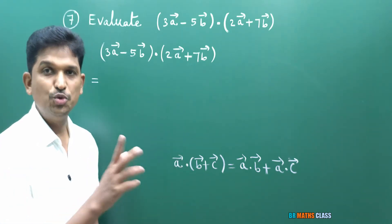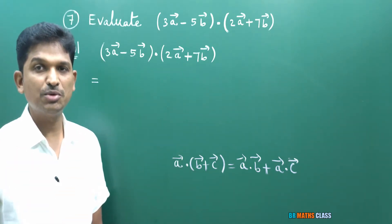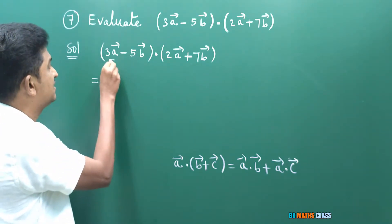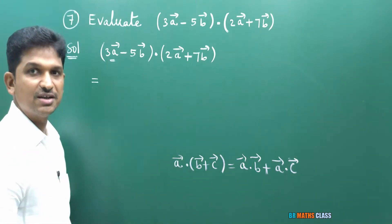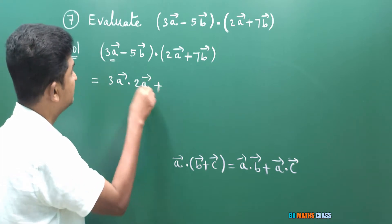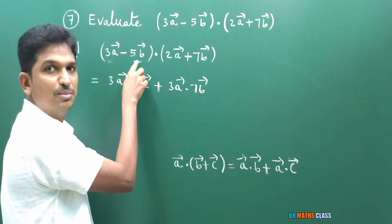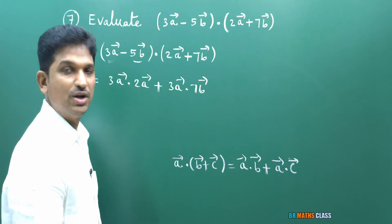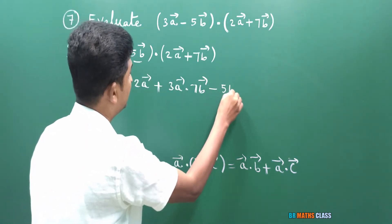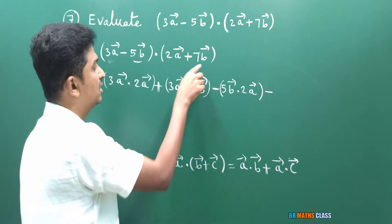You just do like a normal multiplication — but actually it is not normal multiplication, we are doing dot product of these two vectors. Take the first vector and multiply with both terms of the second vector. You will get 3A̅ · 2A̅ + 3A̅ · 7B̅. Then take the second term and multiply with both terms: minus 5B̅ · 2A̅ minus 5B̅ · 7B̅.